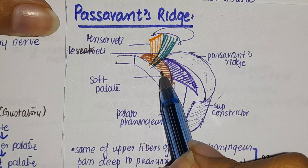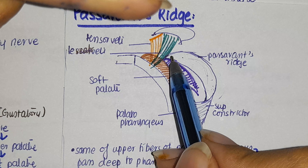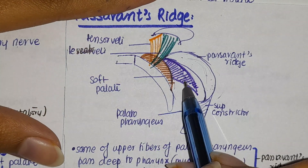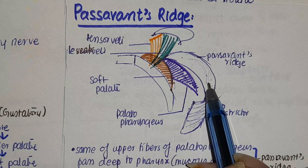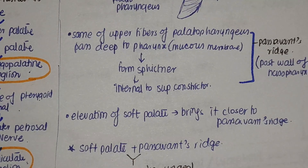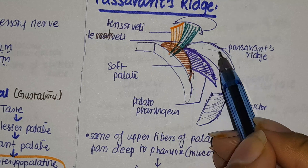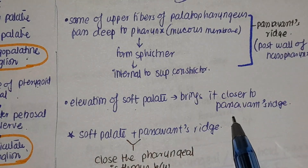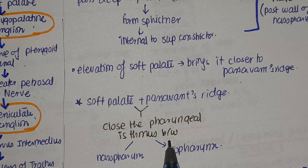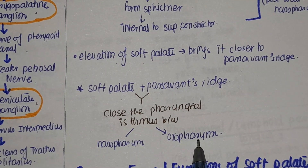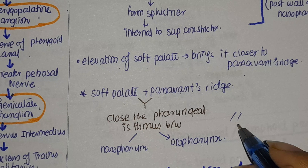To recap: the tensor veli palatini forms the palatine aponeurosis. On its superior side we have the levator veli palatini and the palatopharyngeus. The upper fibers of palatopharyngeus form a sphincter internal to the superior constrictor — this sphincter is known as Passavant's ridge. Whenever there is elevation of the soft palate, the soft palate moves close to Passavant's ridge, and together they close the pharyngeal isthmus — the opening between the nasopharynx and the oropharynx.